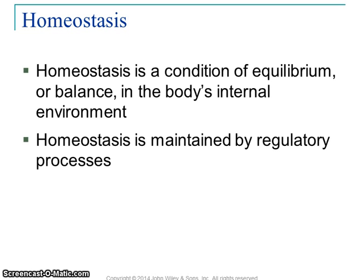Let's go on to homeostasis. Every chapter we will have a portion that focuses on homeostasis. Homeostasis is a condition of equilibrium, or balance, in the body's internal environment. It means keeping everything in our body within an acceptable range. So a normal body temperature — 98.6 degrees Fahrenheit, 37 degrees Celsius — is considered normal, but your body doesn't have to be exactly 98.6. As long as you're not too far away, you're within an acceptable range. So we want to monitor our body's environment and make changes as necessary.